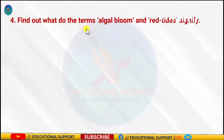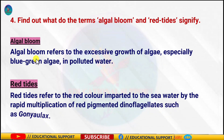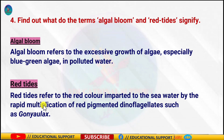Question number four: Find out what the terms algal bloom and red tide signify. Algal blooms are found mainly in contaminated water — they are an overgrowth of algae, especially blue-green algae, which are cyanobacteria. Their growth leads to water pollution; they absorb carbon dioxide and release oxygen. Red tides are the rapid multiplication of red-pigmented dinoflagellates such as Gonyaulax, which gives the sea a red color. This algae produces toxins which kill fish and other aquatic organisms.